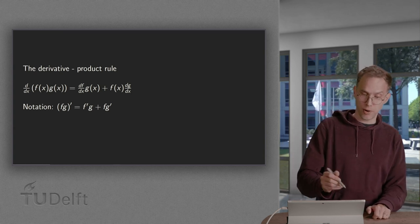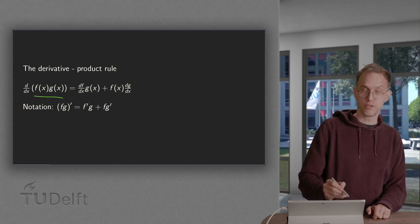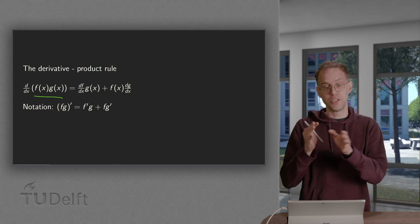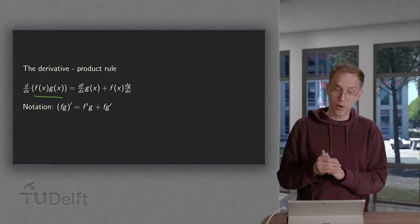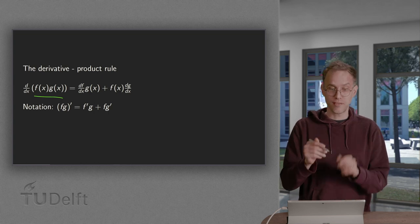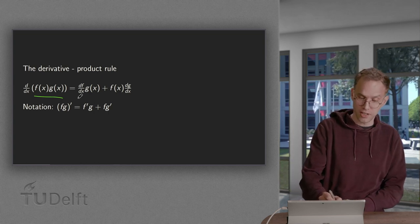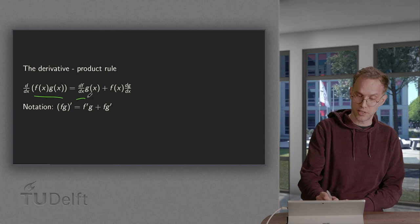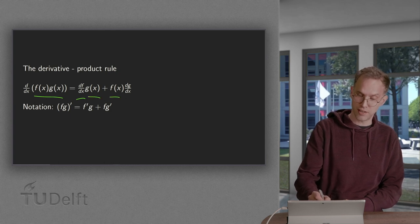So what's the product rule? If you have a product of two functions f of x times g of x, then the product rule is that the derivative of f times g equals differentiate f times g plus leave f and differentiate g.